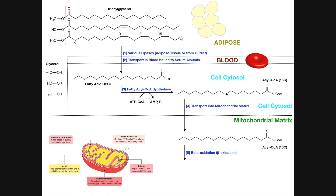Any acyl CoA that we generate has to then move into the mitochondrial matrix. This process was covered in another video where we talked about the carnitine shuttle. It's a bit more complicated than simply moving the acyl CoA across two membranes into the matrix of the mitochondria, but we'll gloss over that and just assume we now have this 16-carbon acyl CoA in the mitochondrial matrix. This is where we have the enzymes for beta-oxidation, and therefore beta-oxidation occurs in the mitochondrial matrix.